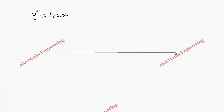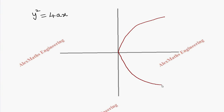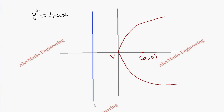Let's look at the general form of a parabola. The equation y² = 4ax gives a curve opening to the right. Taking the x-axis and y-axis, this parabola has the vertex at the origin and extends outward. The focus is at a distance a from the vertex, at coordinates (a, 0), and the directrix is on the other side at distance a from the vertex, given by the equation x = -a.